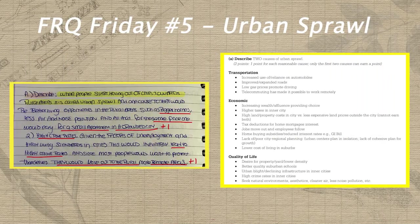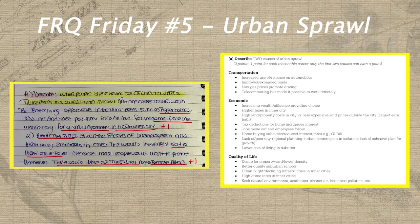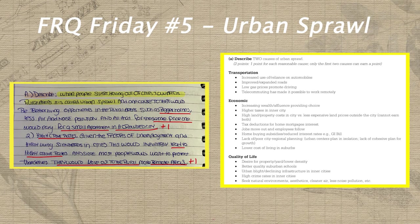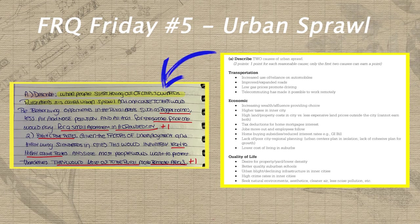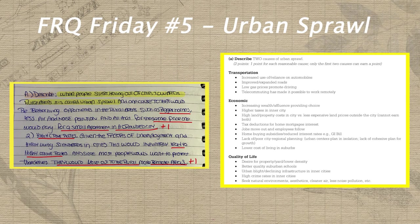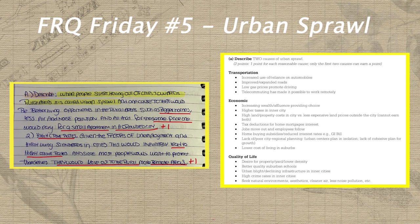If we take a look at letter A, Lean starts off on a great note, earning a point for describing how people move to rural areas in order to have bigger homes for the same price as a smaller apartment in a crowded city. She also earns a point for describing how higher crime rates in cities may cause people to move out to more remote areas. The introductory sentence in letter A is highlighted just to point out that it's not necessary and doesn't earn any points. In a high stakes timed exam setting where you have to write three full FRQs in 70 minutes, you typically don't have time for introductory sentences that don't actually answer the prompt.